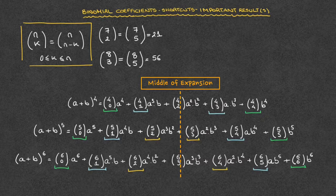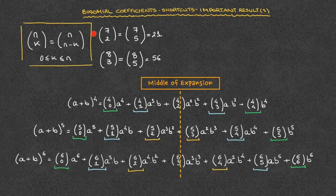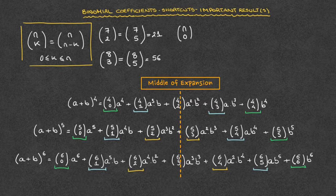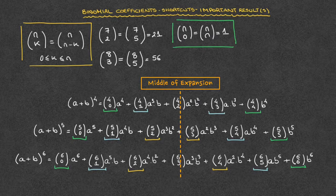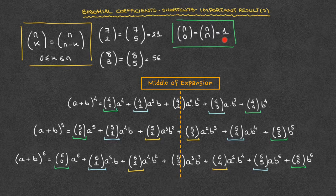We can already see that thanks to this result we'll often end up with just half of the binomial coefficients to calculate. But there's more — using this result we can point out two special cases. The first: the binomial coefficient n choose 0, which according to our result equals n choose n, will always be equal to 1. This means the first and last binomial coefficient in any binomial expansion will always equal 1.